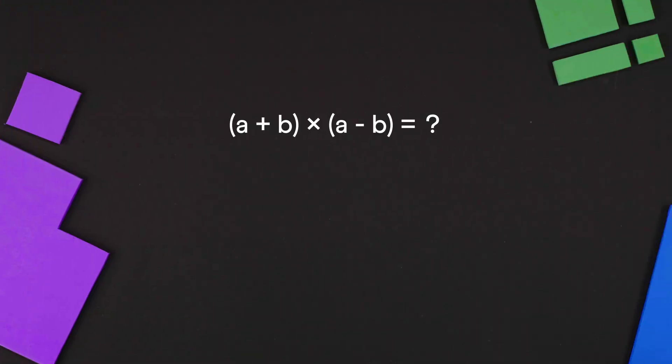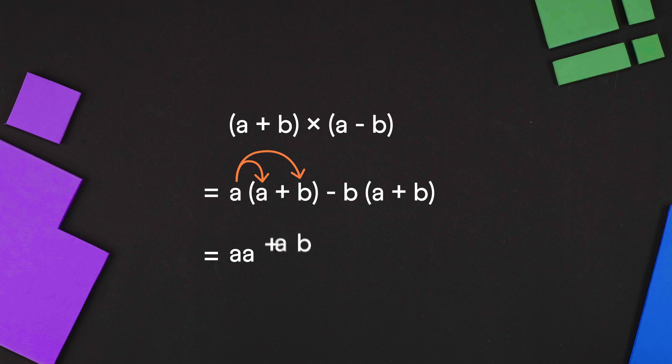Using the distributive property, we can multiply the first bracket to a and then to minus b. Now let's apply the distributive property again to both the terms here. a gets multiplied by a, then b. Same with the next term. Minus b gets multiplied by a and then b.